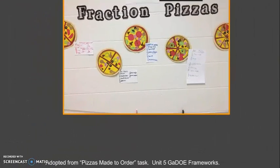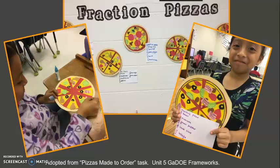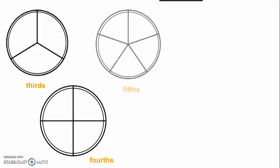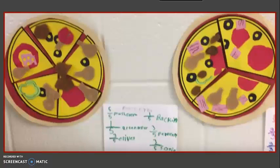In the Georgia Frameworks, there are several tasks to promote conceptual understanding of building and comparing fractions. This pizza task was adapted from Unit 5. Each student selected the number of pieces that their pizza would be partitioned into. Although the size of the pizza was the same, the number of pieces on each pizza varied from student to student. After students added the ingredients to their pizzas, they were able to compare their pizzas to others that contained the same number of pieces, as well as to students who had fewer or more pieces.